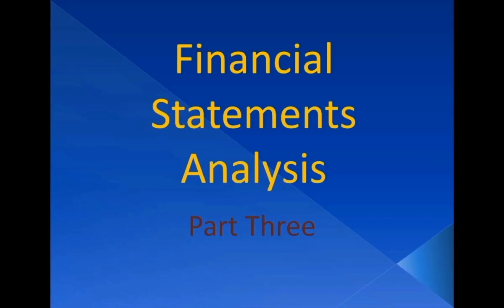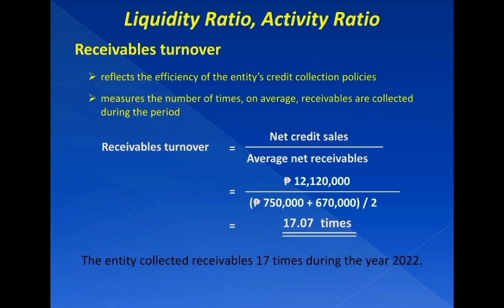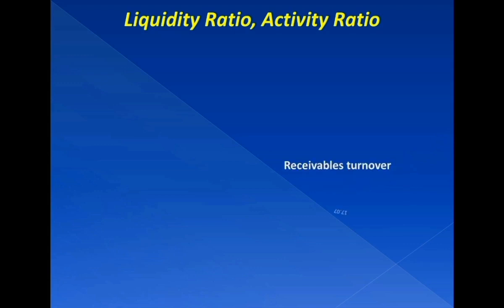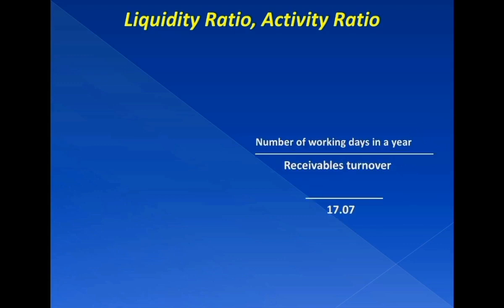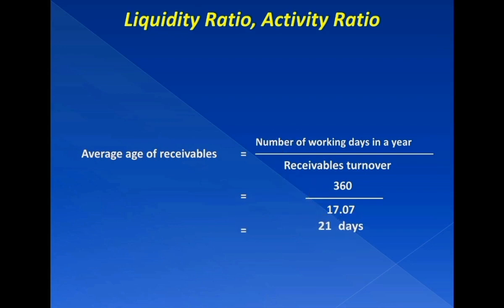The last ratio, which we were able to solve in the previous video of this lecture series, is the receivables turnover of 17.07 times. Using this ratio to divide the number of working days in a year, we get the average age of receivables. Assuming 360 working days in a year, the average age of receivables is 21 days.